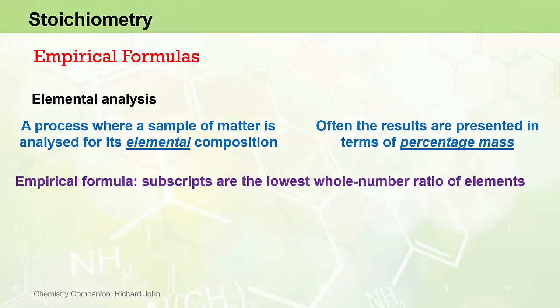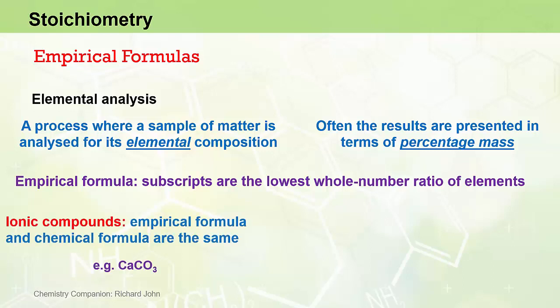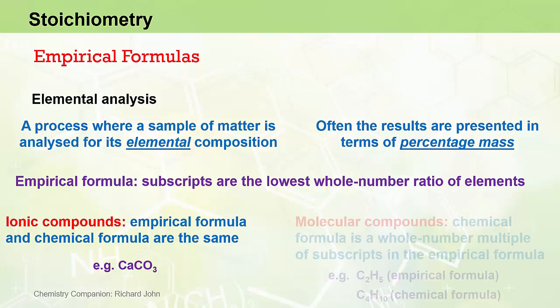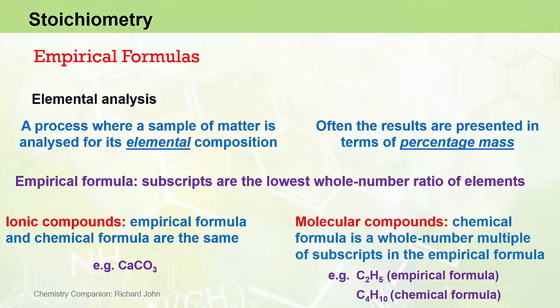It's worth reminding ourselves what an empirical formula is — it's a chemical formula where the subscripts are written in the lowest whole number ratio of the elements involved in that compound. For ionic compounds, the chemical formula is already written in the lowest whole number ratio, so the empirical formula and the chemical formula are the same. For molecular compounds, the subscripts in a chemical formula are a whole number multiple of the subscripts in the empirical formula.